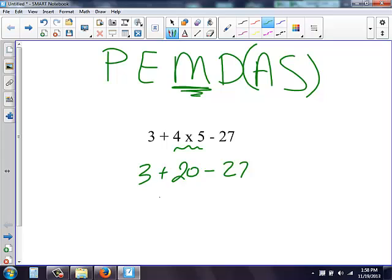So 3 plus 20, I get 23. And then all I have to do is subtract. Again, we can change our subtraction problems to plus a negative. So we're always adding. So I have 23 plus a negative 27 gives me a negative 4.